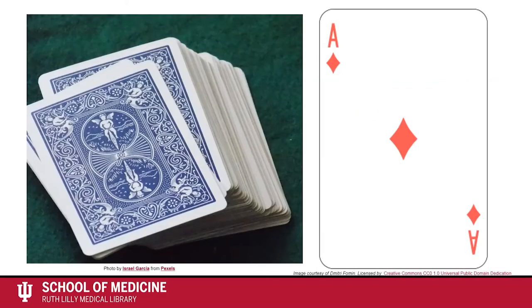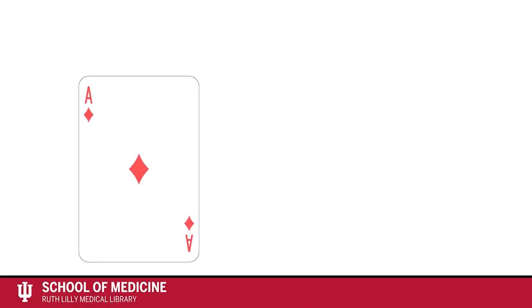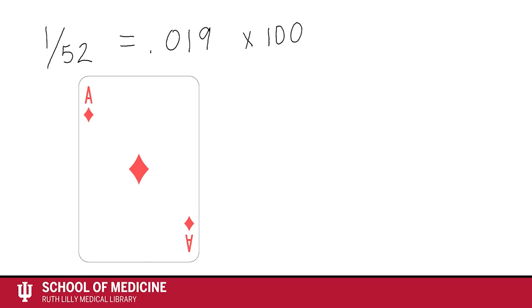What is the absolute risk of picking the Ace of Diamonds out of an ordinary deck of 52 playing cards? There is only one Ace of Diamonds in a deck of 52 cards, so there is a one in 52 chance or risk of picking the Ace of Diamonds.